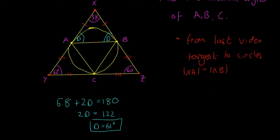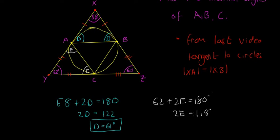Starting with the top two base angles: I'll call them D. Because it's an isosceles triangle, we have 58 plus 2D equals 180, so 2D equals 122, meaning D equals 61 degrees. For the next pair, I'll call them E: 62 plus 2E equals 180, so 2E equals 118, meaning E equals 59 degrees.